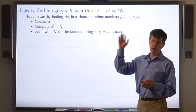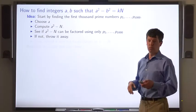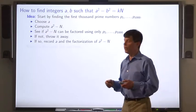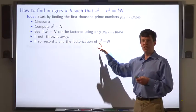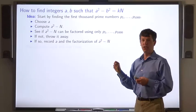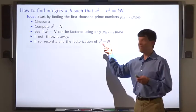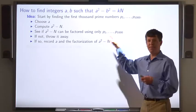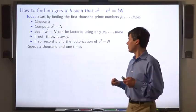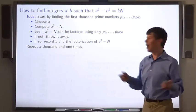And if not, we throw it away and we choose another a. If it can be, we record a and the factorization of a squared minus n. Remember, the factorization of a squared minus n in this case consists just of a subset of these first thousand primes. We repeat this process about a thousand times.